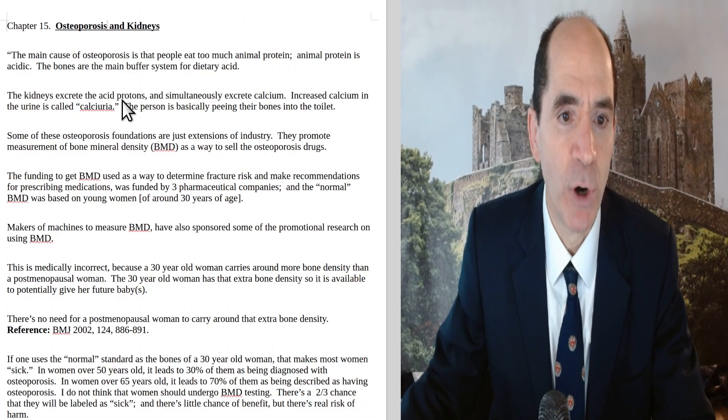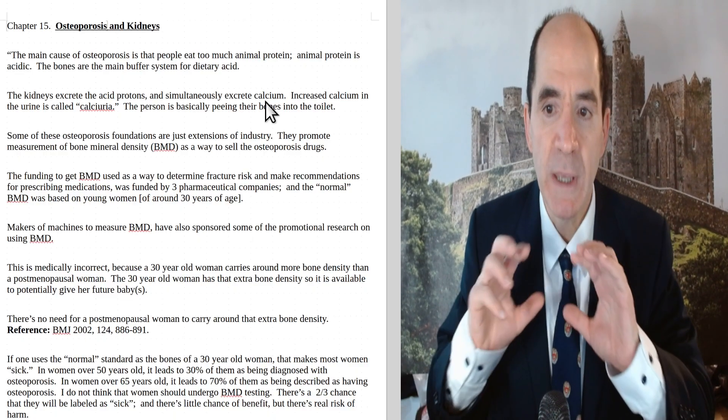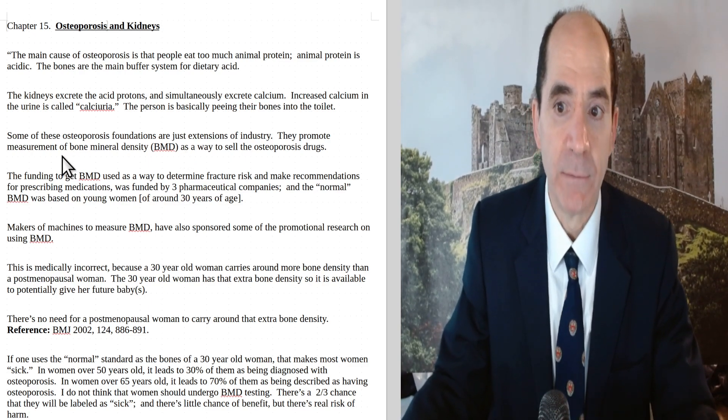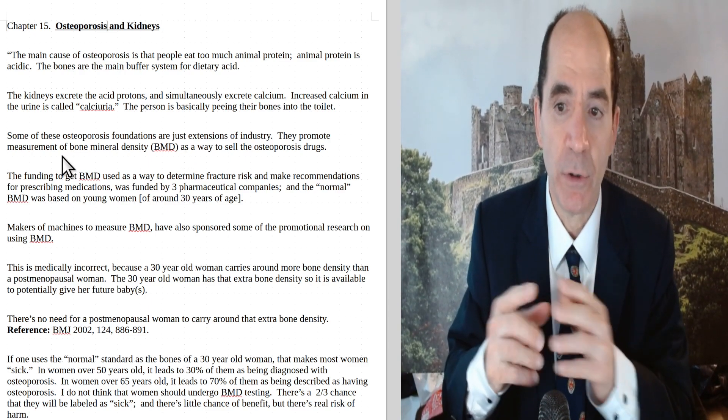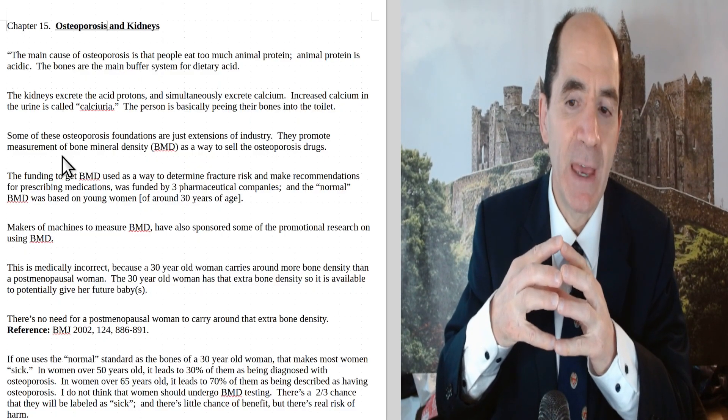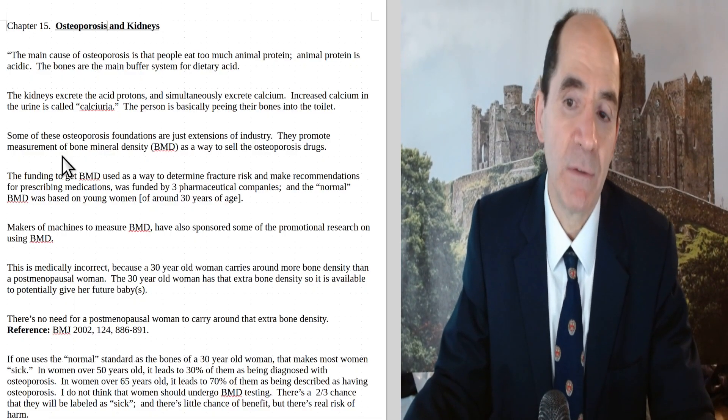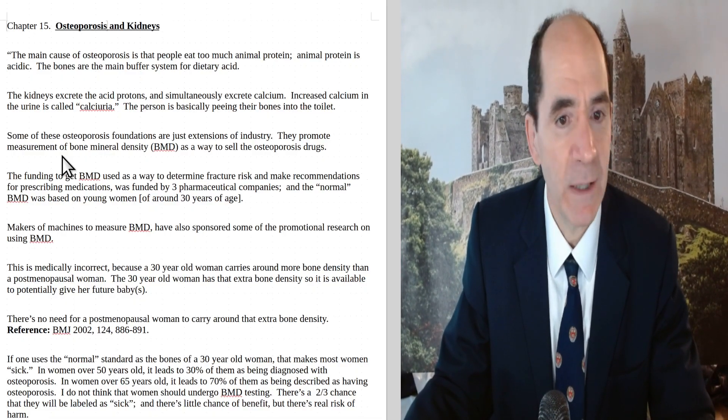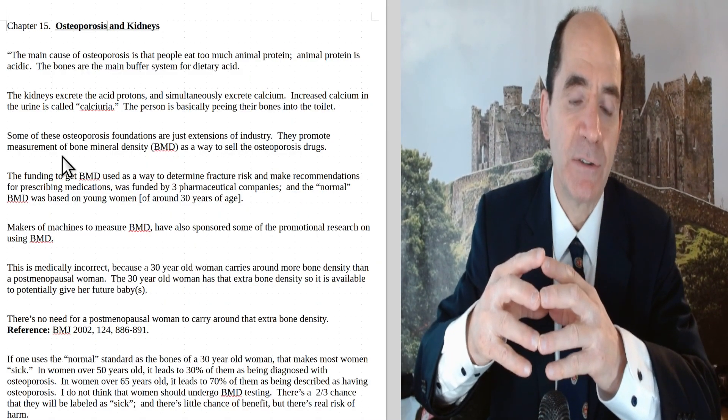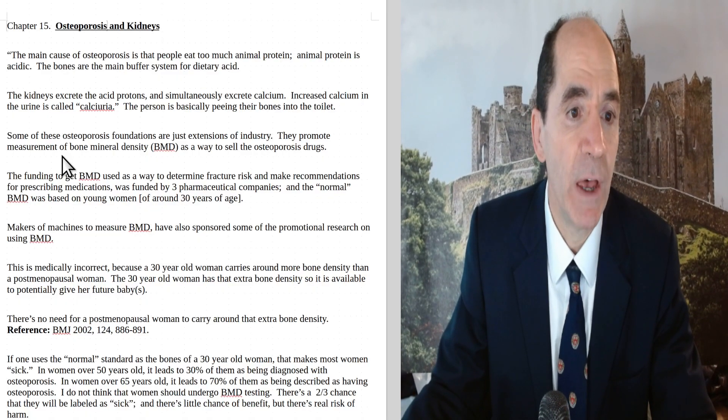The kidneys excrete the acid protons and simultaneously excrete calcium. When you have increased calcium excreted in the urine, that's called calciuria. You're peeing your bones into the toilet. The high amount of calcium in the kidney tubules can precipitate - you can form a kidney stone, bladder stone, or ureteral stone. Simply the calcifications precipitating in the renal medulla can progressively lead to kidney failure.